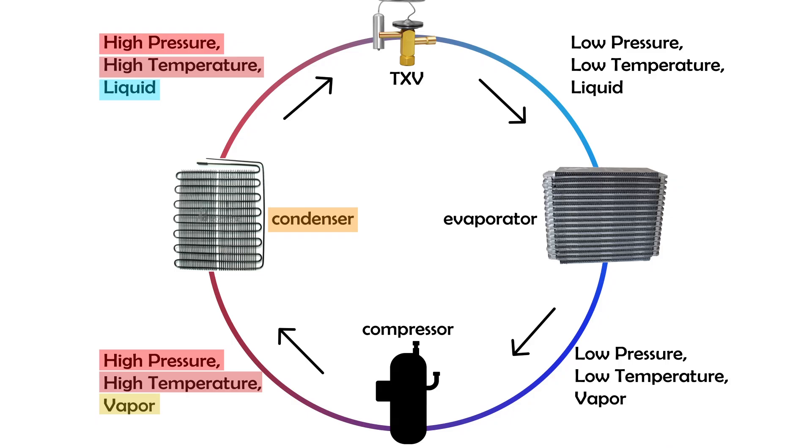The high-pressure liquid then flows into the TXV, or thermal expansion valve. This component has a very small opening, which causes a sudden drop in pressure as the refrigerant passes through. As a result, the refrigerant becomes a low-pressure, low-temperature liquid.